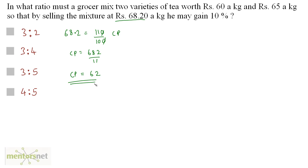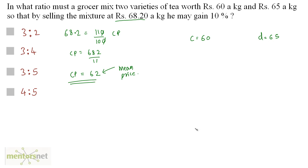This is the cost price. Now you mix these two varieties of tea — at 60 Rs. per kg and 65 Rs. per kg — in such a way that you get a cost price of 62 Rs. So 62 is the mean price. We are mixing these two teas to get 62 Rs. as the mean price and selling the mixture at 68.2. The cheap variety C is 60, the costlier variety D is 65, and the mean price M is 62.